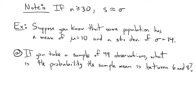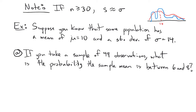For now, let's look at this example of sampling distributions. Let's say we have a population distribution. We don't know what it looks like, but we know the mean and the standard deviation. Maybe it's kind of skewed — whatever it is, we know it has a mean of 10 and a standard deviation of 14. It might look normal, or even wackier. We don't know.